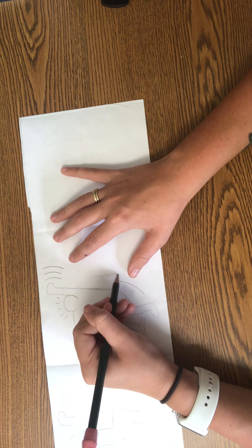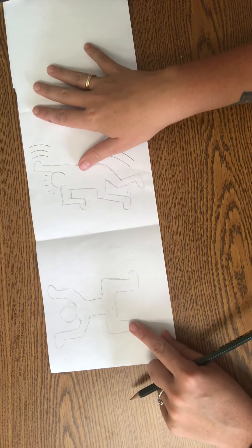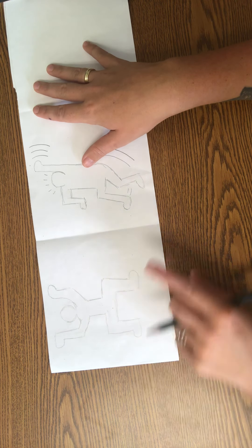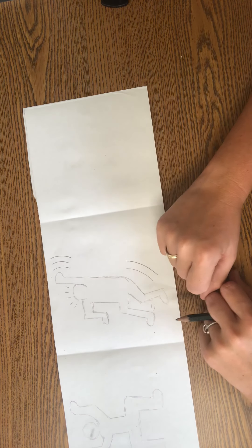So those are the two ways you can draw a Keith Haring figure. You can use the stick figure method or you can study what you're looking at and try to recreate it.